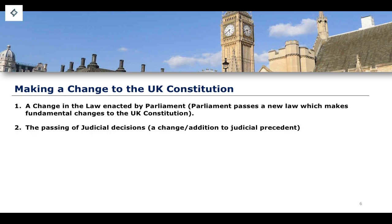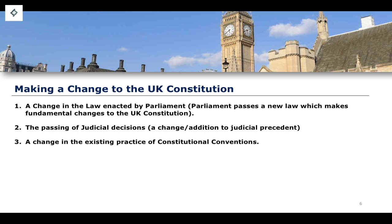You may also have the passing of judicial decisions. The handing down of a judicial decision can make a change to the constitution, either by changing specific judicial precedent or by adding to it through new circumstances and situations. This is another way in which the constitution can change, and it can change particularly quickly. There is also the change in the existing practice of constitutional conventions — we will get to how new conventions form versus how old conventions wither away over time, but that's another way in which a fundamental change to the constitution can be made.